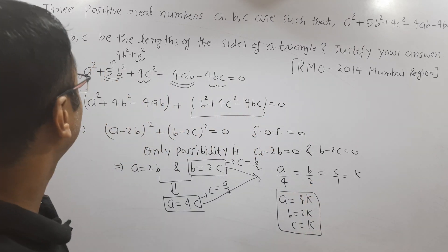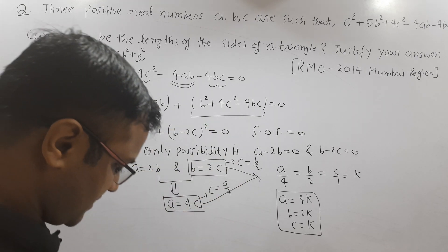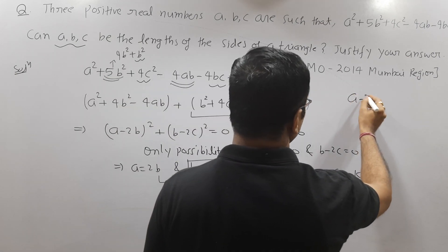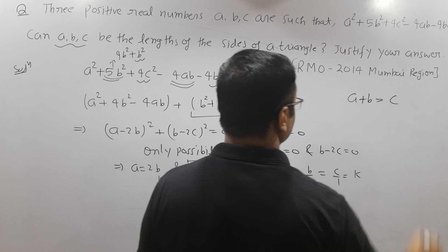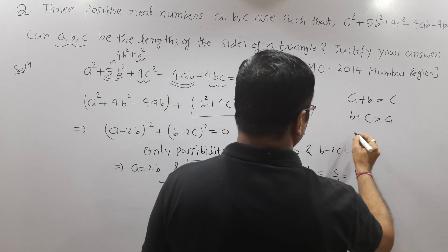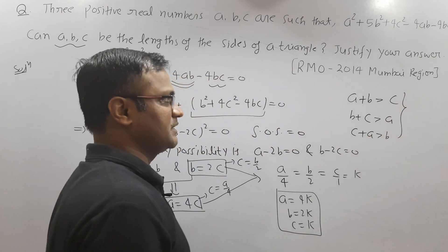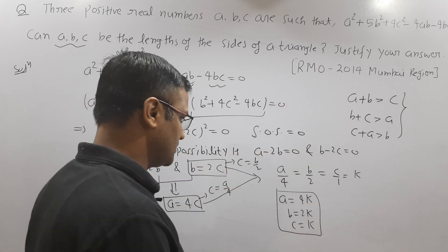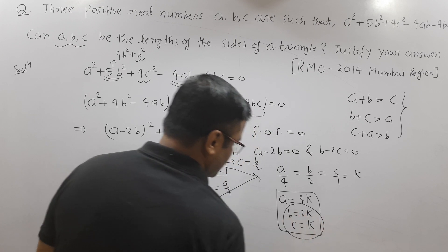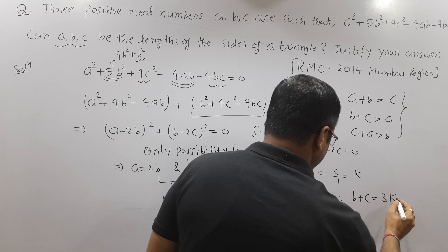Now we have to check that a, b, c form the side length of a triangle or not. We are familiar with the triangle inequality: the sum of any two sides of a triangle is always greater than the third side. a + b must be greater than c, b + c must be greater than a, and c + a must be greater than b. Look at the last case: b is 2k and c is k, therefore b + c = 3k.